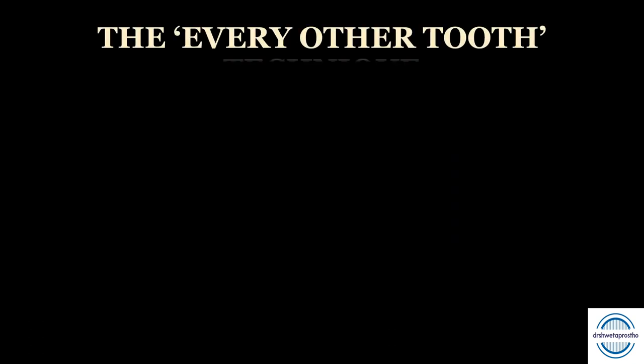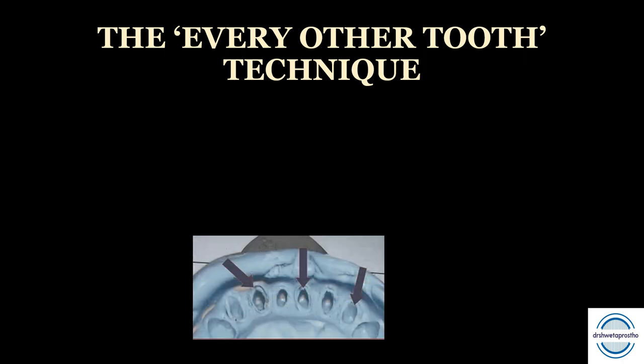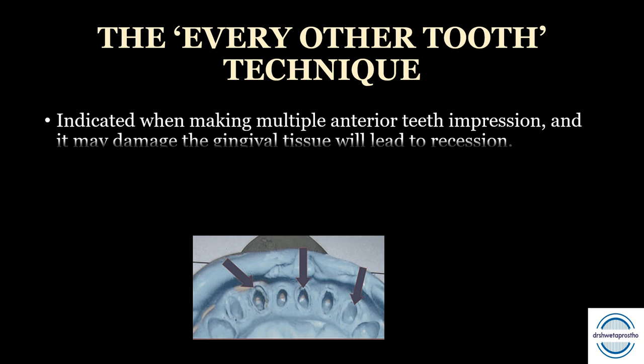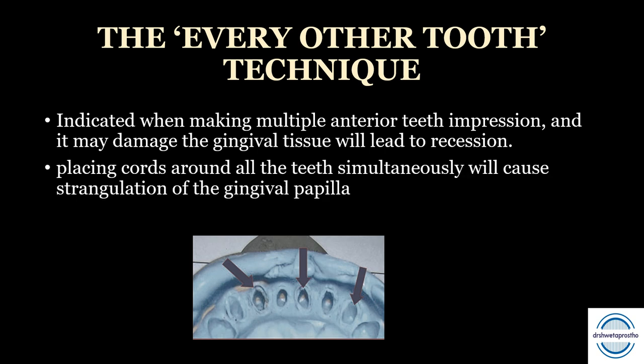The every other tooth technique — as the name implies, cords are placed in alternate teeth. It is mainly indicated when multiple anterior teeth are prepared and placing cords around all teeth simultaneously is not possible. Simultaneous placement may cause trauma, strangulation of the gingival papilla, and damage to gingival tissues.